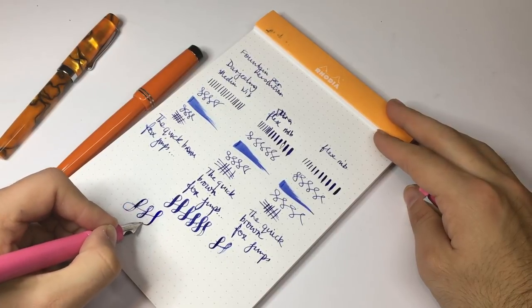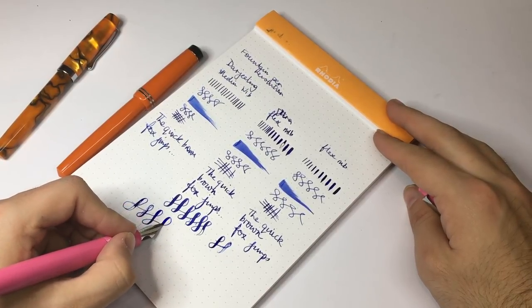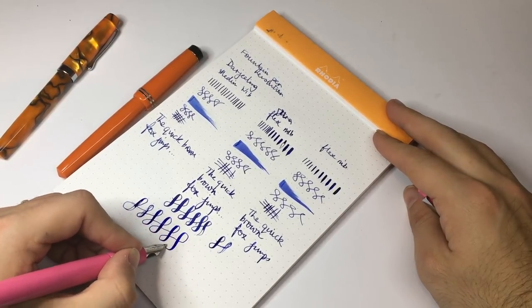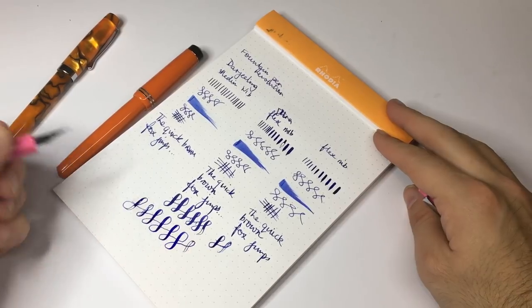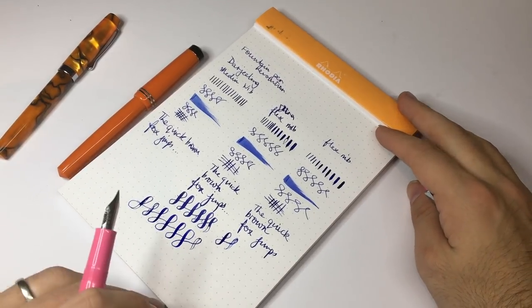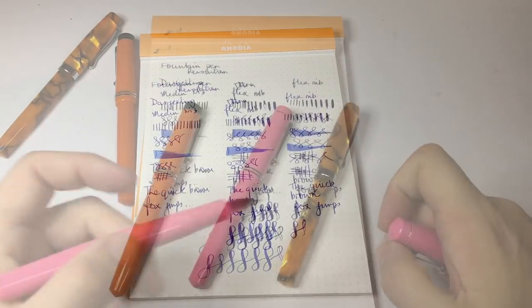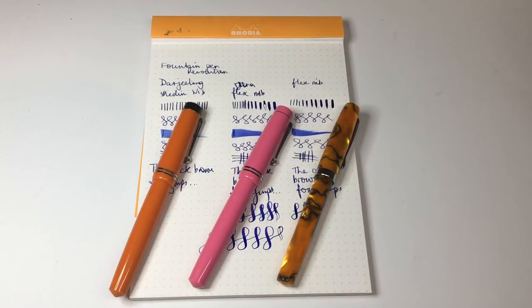But give it a few seconds and there's enough ink once again in the feed to allow you to really get some quite lovely line variation. And I have to say this Serenity Blue ink does look really nice with the flex. It's quite a nice, it's a lovely sort of rich blue.